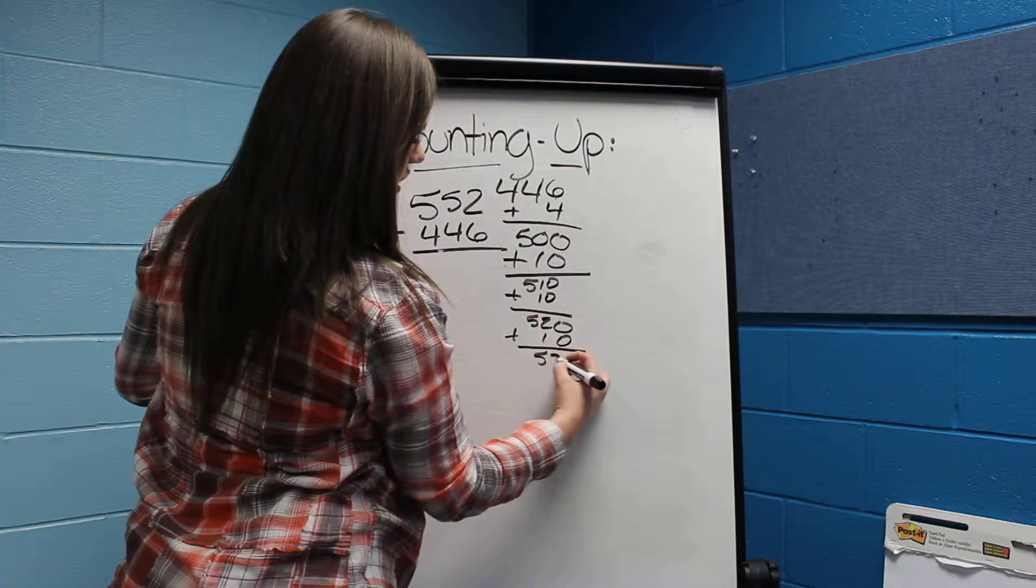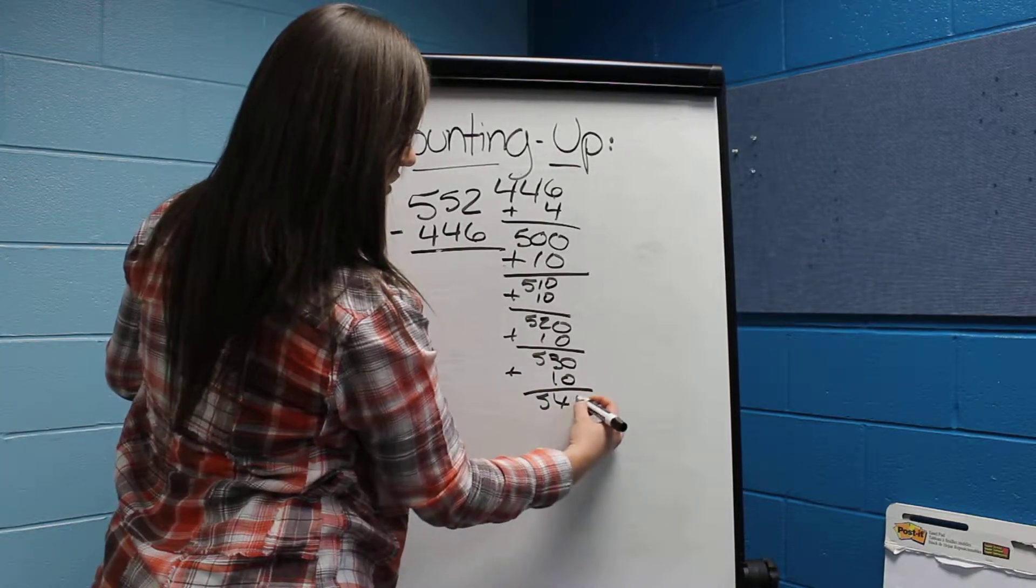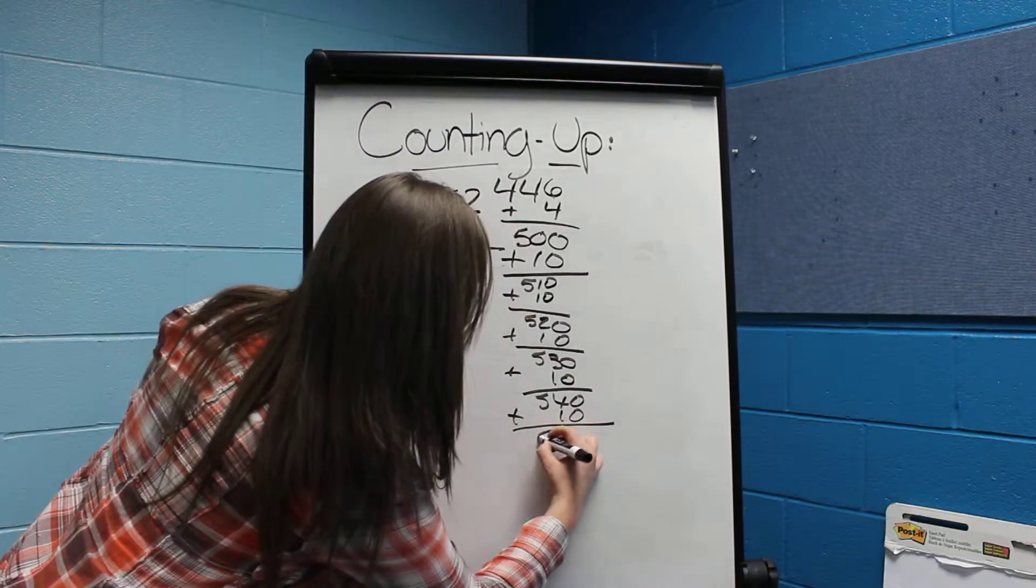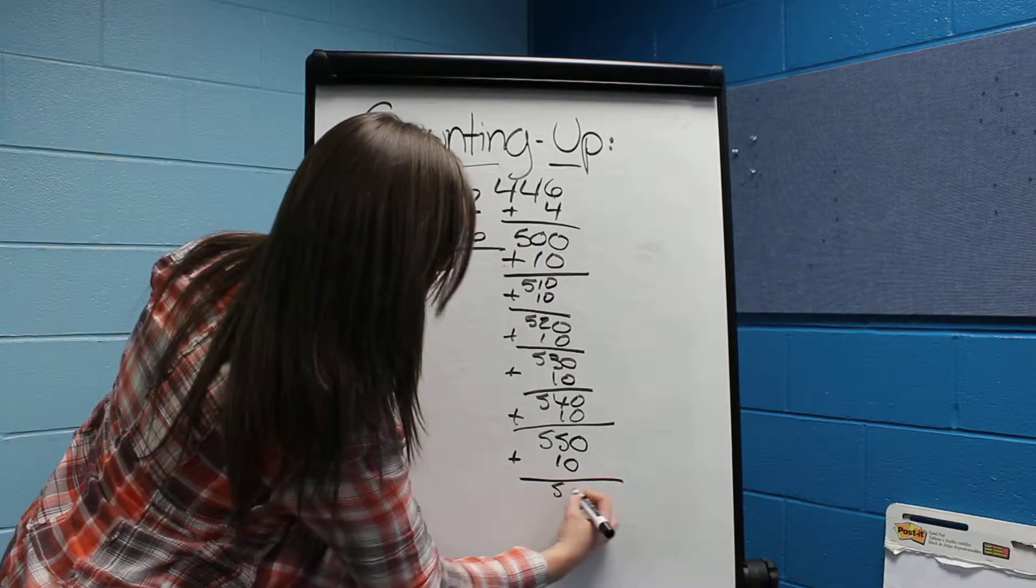530 plus another 10, which is 540, plus another 10, which is going to give us 550, plus one more 10, which is going to give us 550.